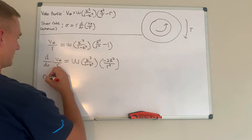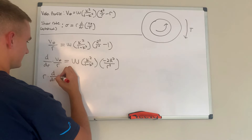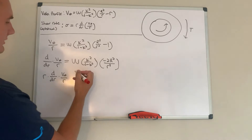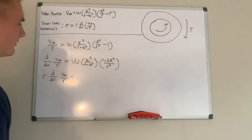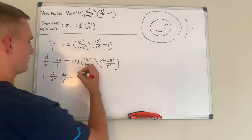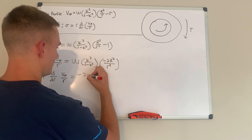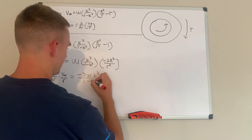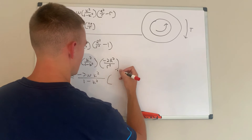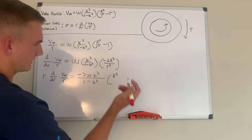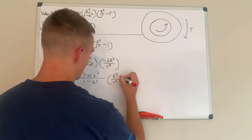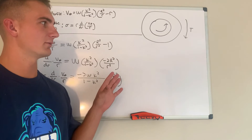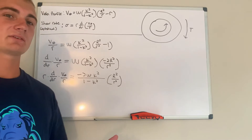The last step is to multiply everything by R, giving us R times d/dR of (V_theta over R). Now we have applied all the steps to the velocity profile. Writing this more clearly: we have negative 2 omega times k-squared over (1 minus k-squared), with the result having little r-squared on the bottom after multiplying by R.